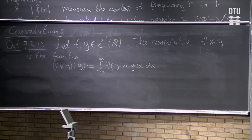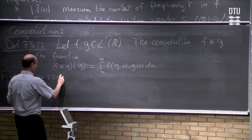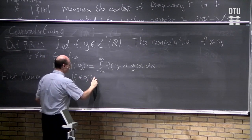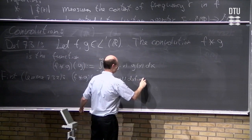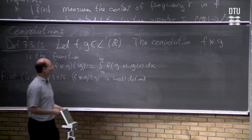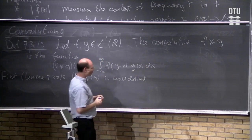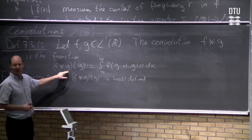You will see very soon why we define the convolution this way. When we write down things like this, we have to argue that it is actually well defined, and this is shown in a lemma just after the definition. The lemma says that the convolution f * g evaluated at y is actually well defined — you look at the expression, take the absolute value, do some estimates and show the result is finite. Moreover, the function f * g turns out to belong to L1.